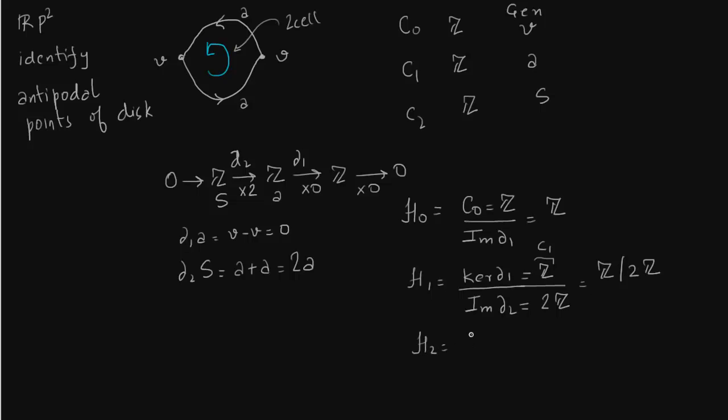What about H2. Again kernel of delta 2 over image of delta 3. Image of delta 3 is just 0. Because there are no cells of 3 or higher dimension. So kernel of delta 2 is 0. Because it is just an injective map. It is multiplication by 2. So 0 gets mapped to 0.